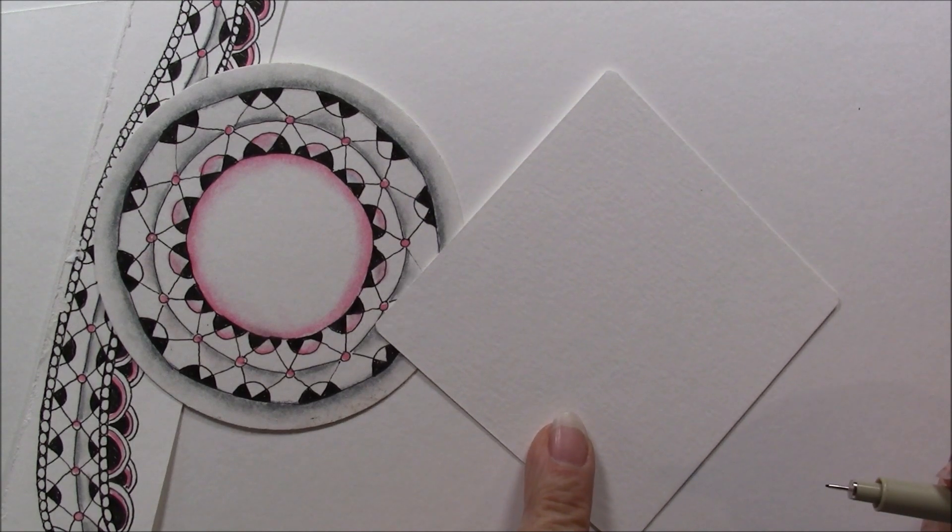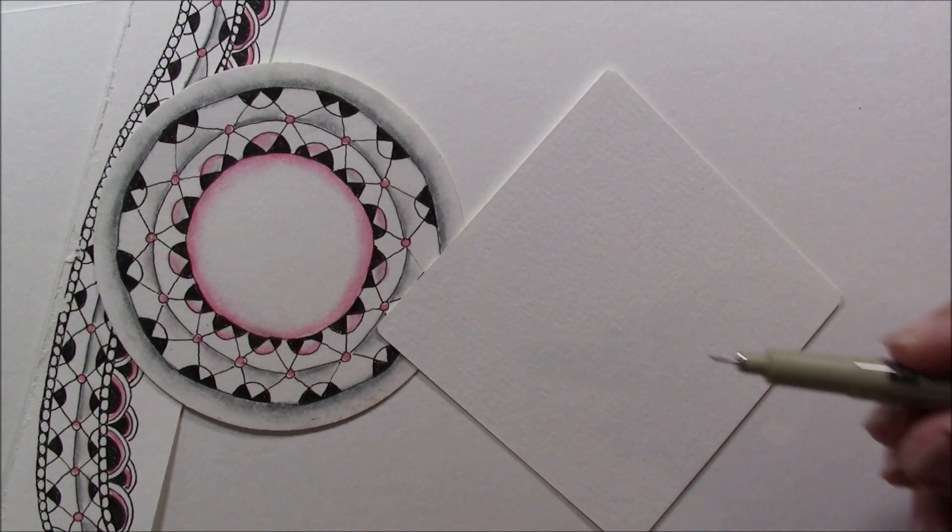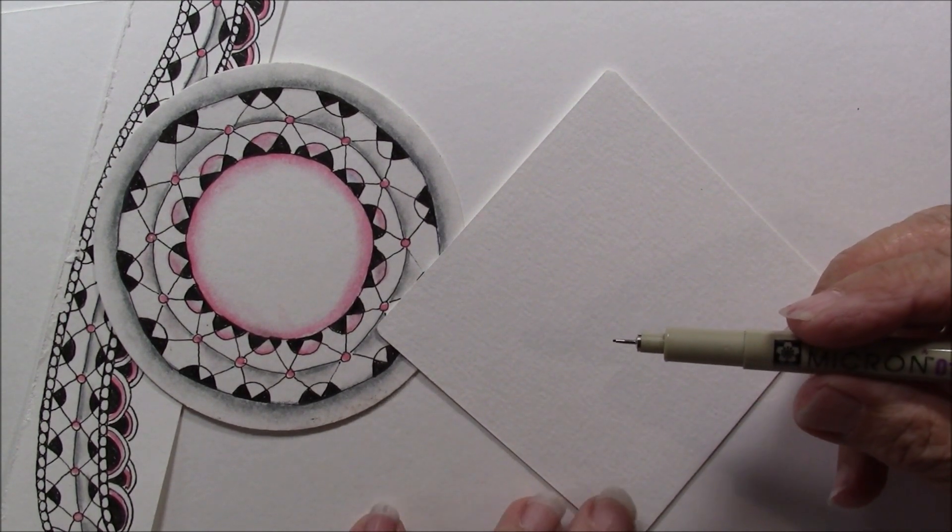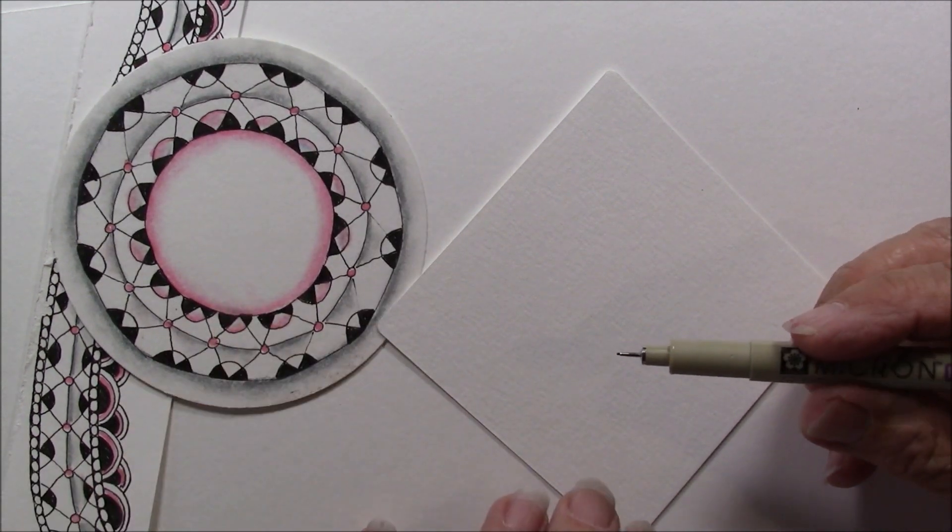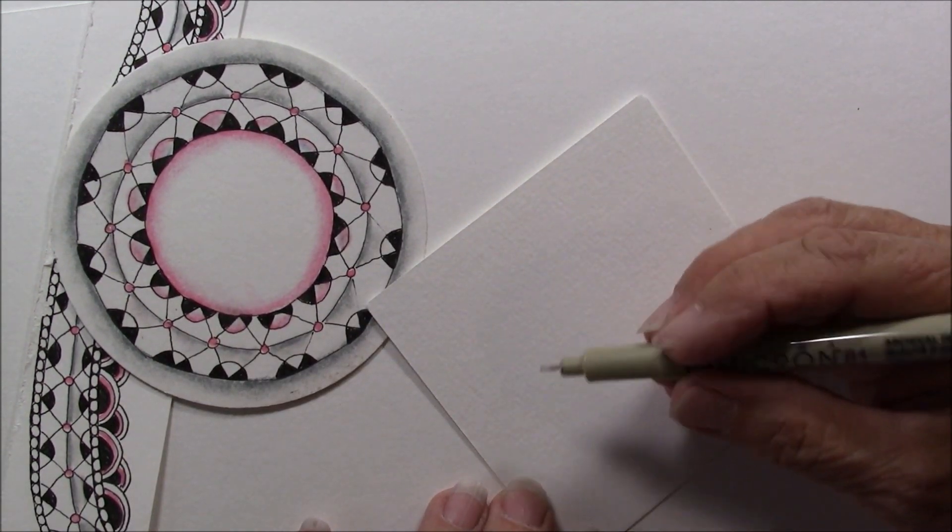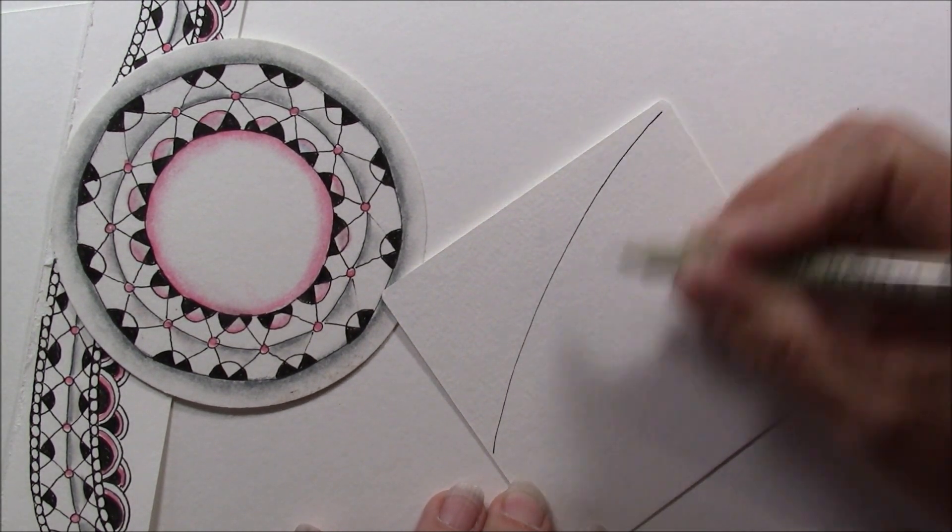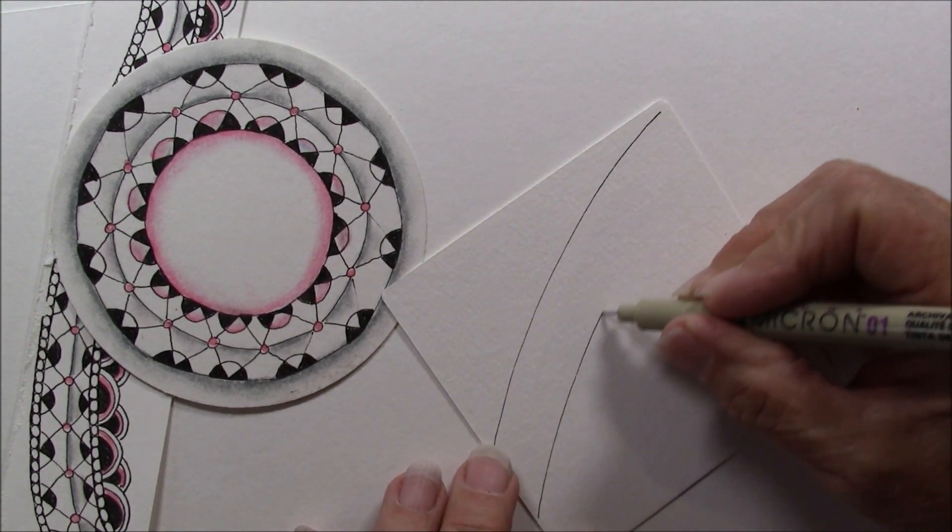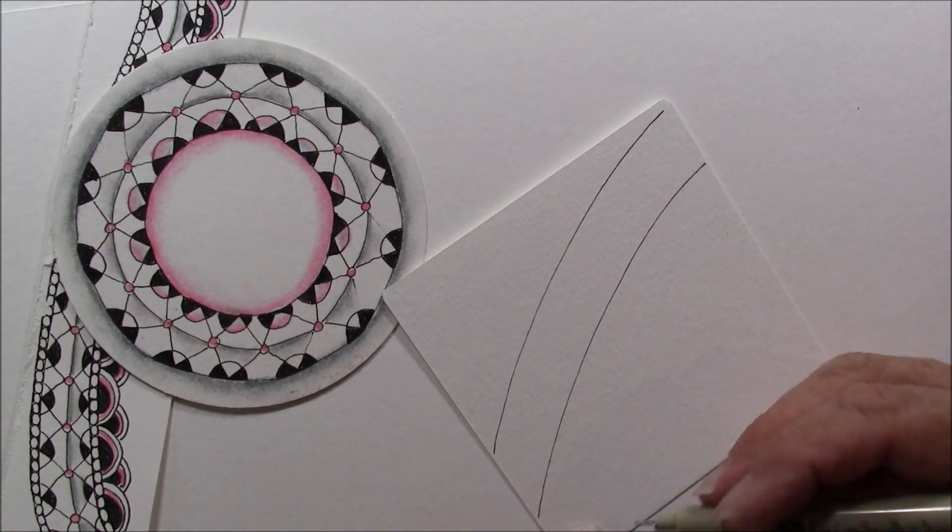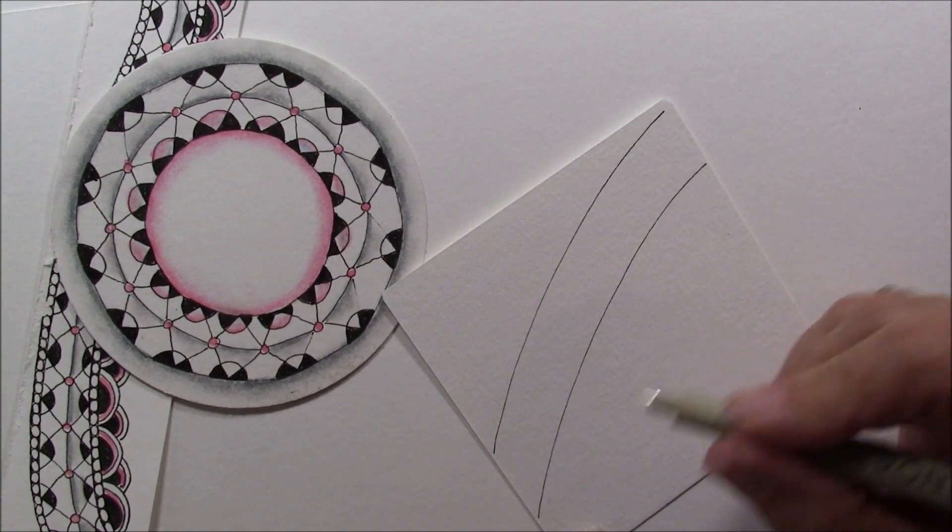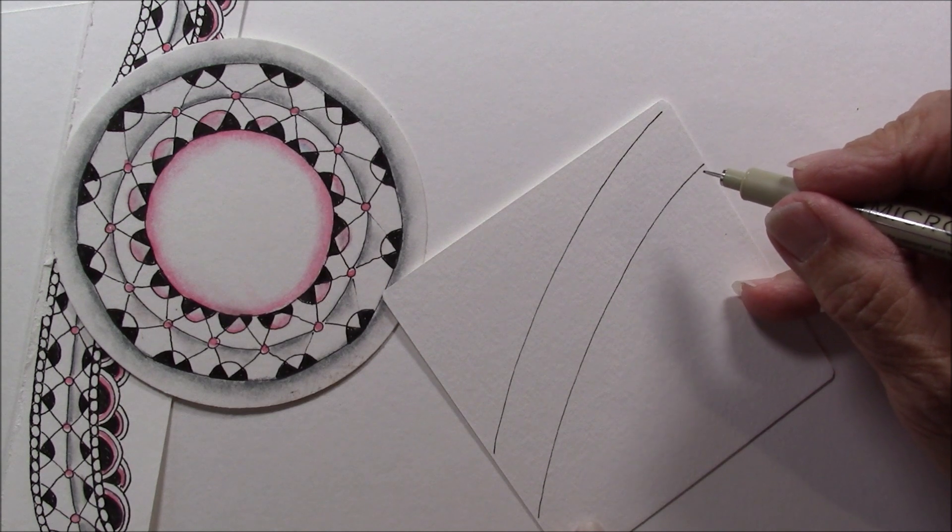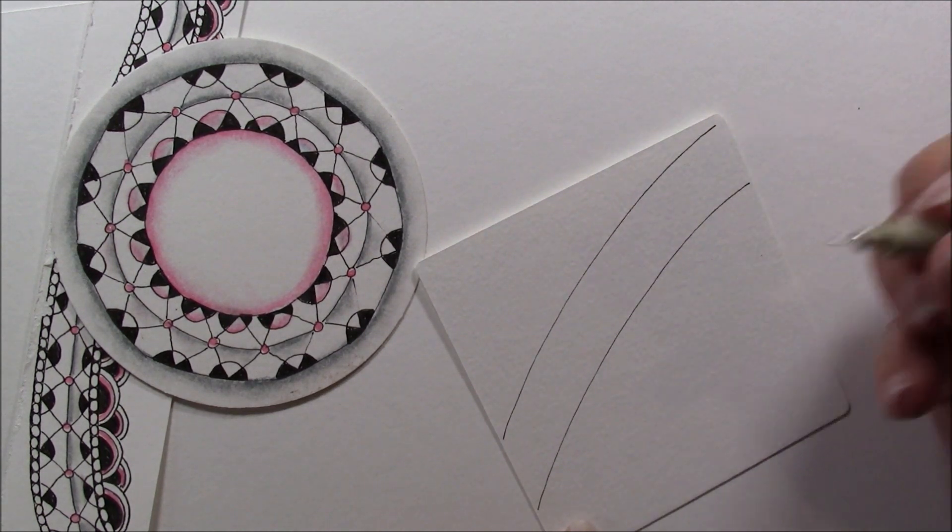So I'm going to start out and I'm just going to draw lines with my pen. I'm using a Micron 01 by Sakura, and we're just going to start out by drawing a couple of lines for a border. I could do three or four, but I'm just going to do one so you get the gist of the tangle and then we can add things around it.